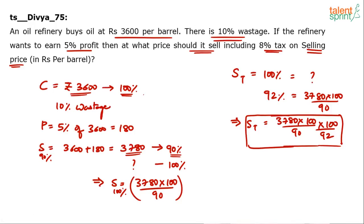To recap: we spent 3600 rupees for a barrel but get only 90% of the quantity due to 10% wastage. For 5% profit, the selling price is 3780, but that's for 90% of the quantity. So for 100% of the oil, we scale up using 3780 × 100 / 90.